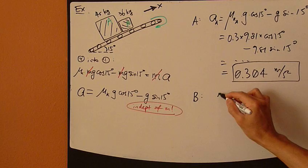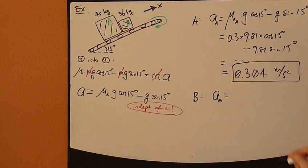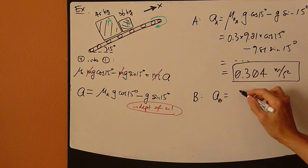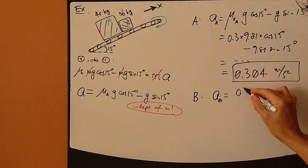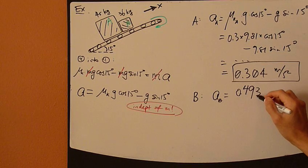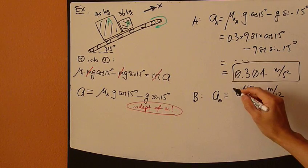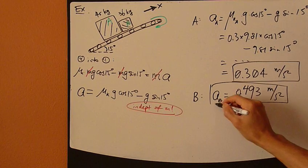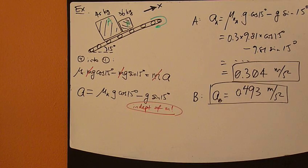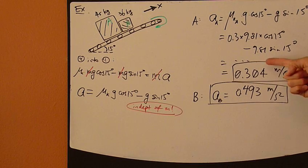Same thing for particle B. a_B, plug it in, do the same thing, and it turns out to be 0.193 meters per second squared.